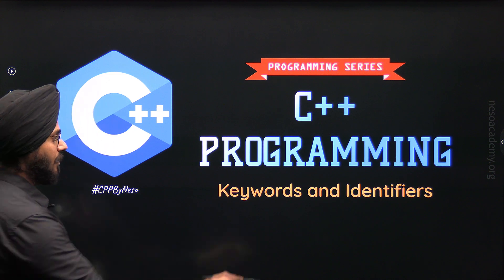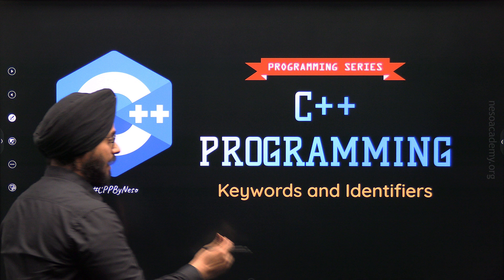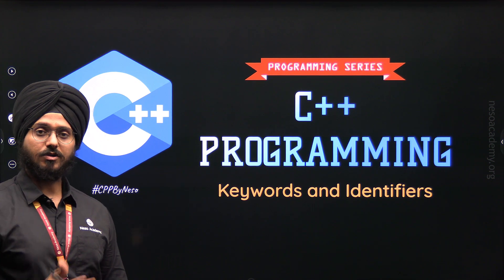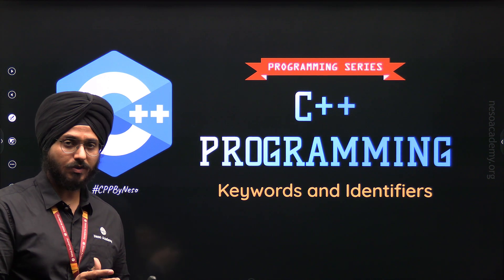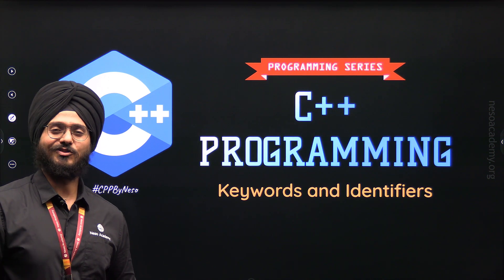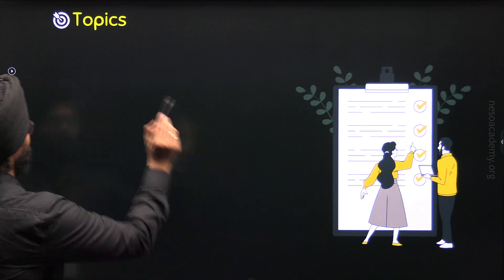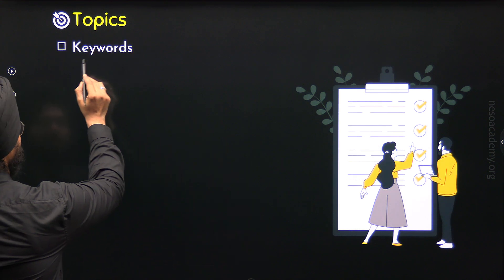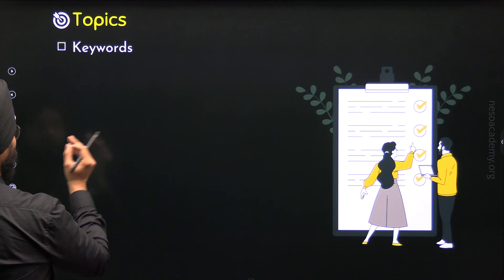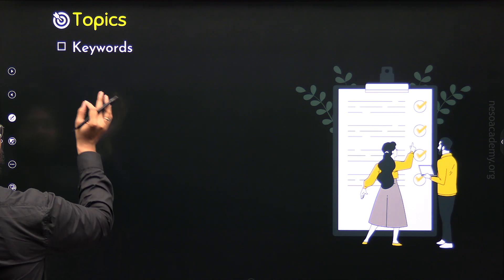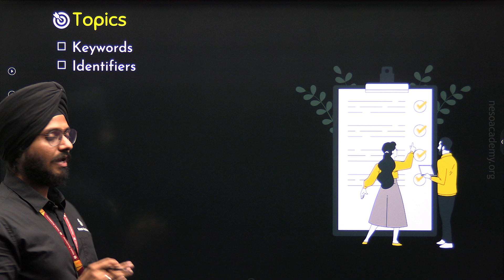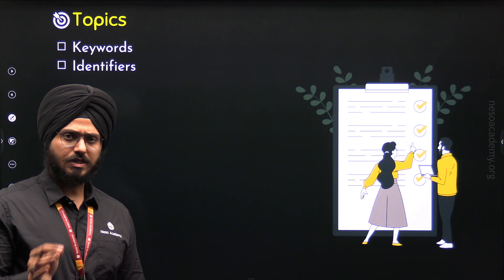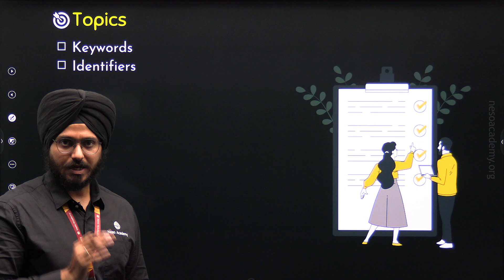The name of this lecture is Keywords and Identifiers. In this lecture, we will understand what are Keywords and what are Identifiers. The first topic is Keywords, then we will move to the next topic where we will understand what are Identifiers and what are some rules associated with Identifiers. So these are the two topics which we will deal with in this lecture.